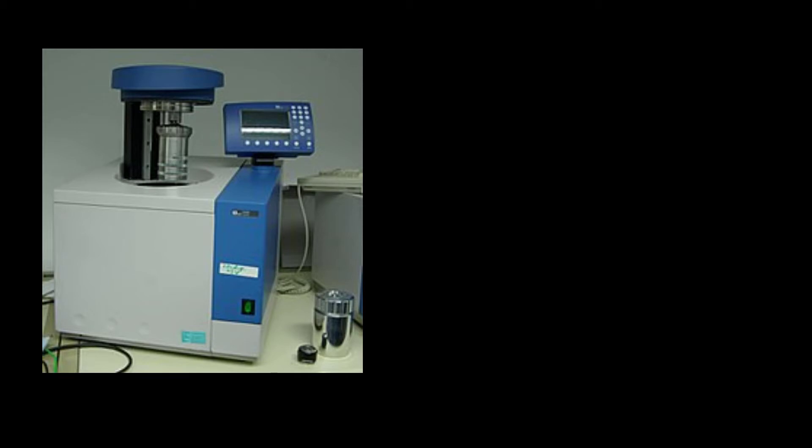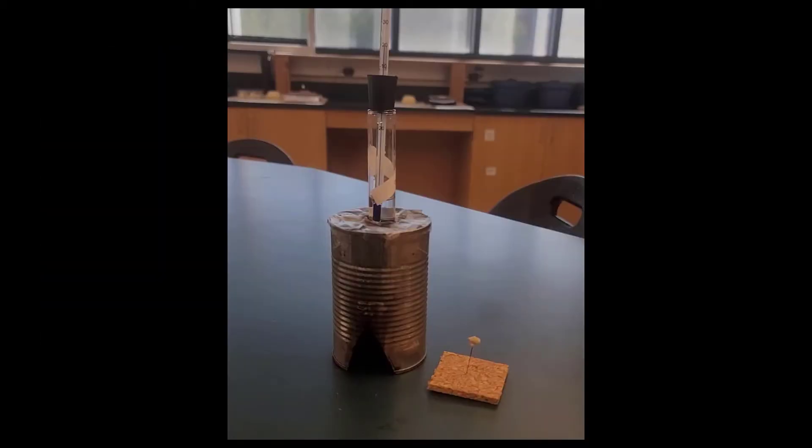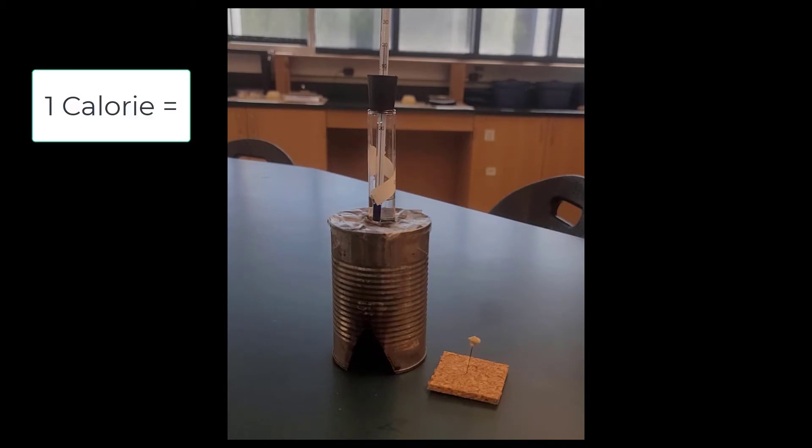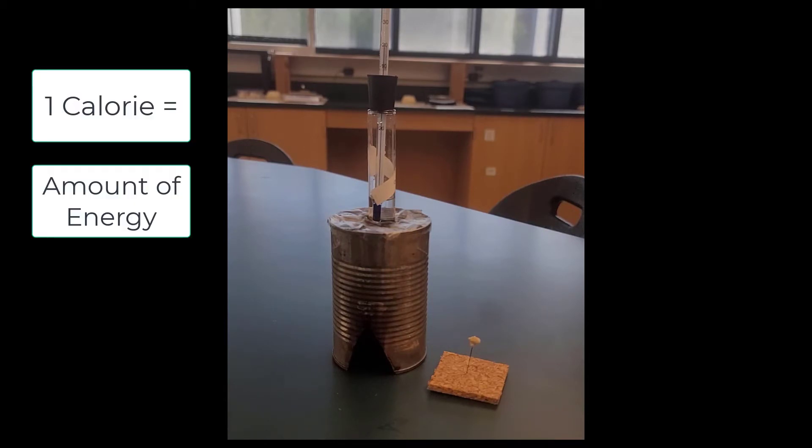The way they do this is by using this device called a calorimeter, which essentially burns up the food and measures how much energy is released when you burn the food. It turns out that a calorie is based on how much energy is required to heat up a known amount of water.